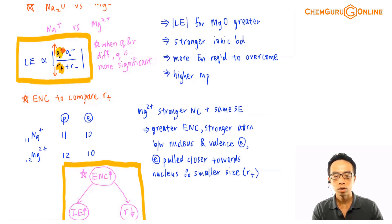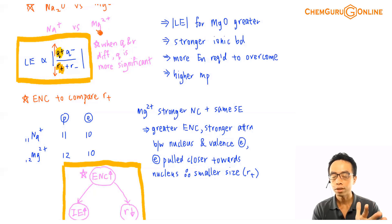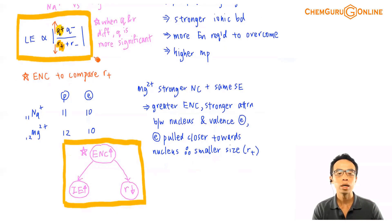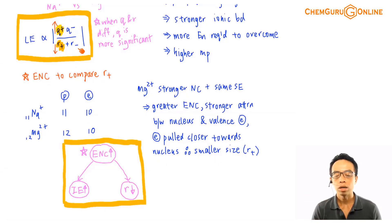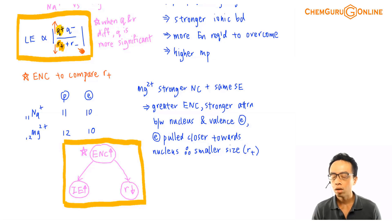Let's consider Q⁺ and R⁺ first. Comparing Na⁺ and Mg²⁺, the charge Q⁺ for Mg²⁺ is clearly higher — this is obvious. But how do we compare R⁺, the size of these two cations? And are we able to do that? The answer is yes, we are able to compare them.